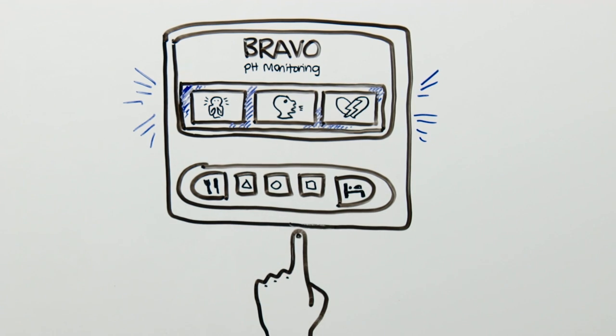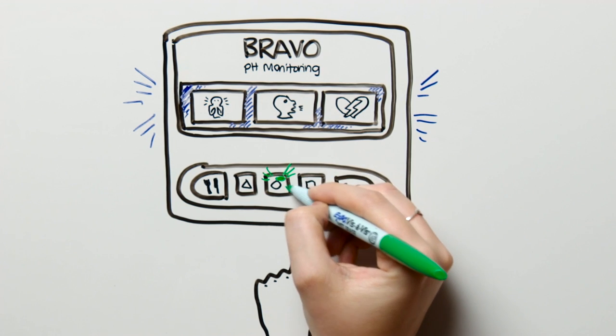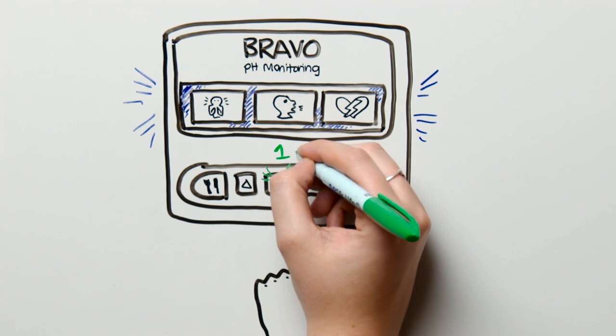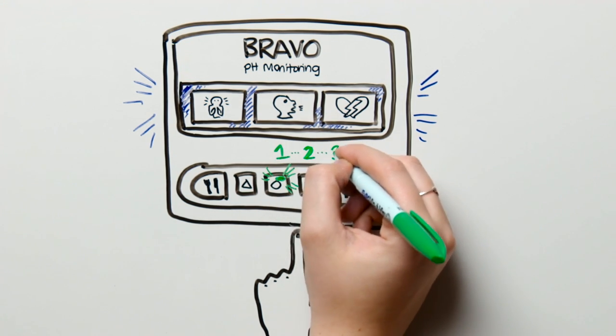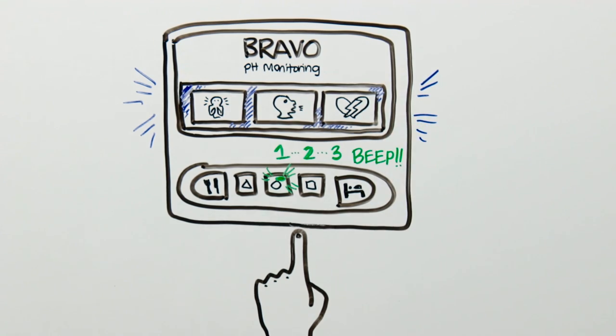When you push one of the symptom buttons, you will see a green indicator light that will illuminate for three seconds, which confirms that it has recorded your symptoms. You will also hear a beep.